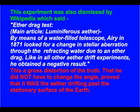This experiment was also dismissed by Wikipedia, which said: Ether drag test, under the main article Luminiferous Ether. By means of a water-filled telescope, Airy, in 1871, looked for a change in stellar aberration through the refracting water due to an ether drag. Like in all other ether drift experiments, he obtained a negative result. This is a gross distortion of the truth. That he did not have to change the angle proved that it was the ether drifting past the stationary surface of the Earth.